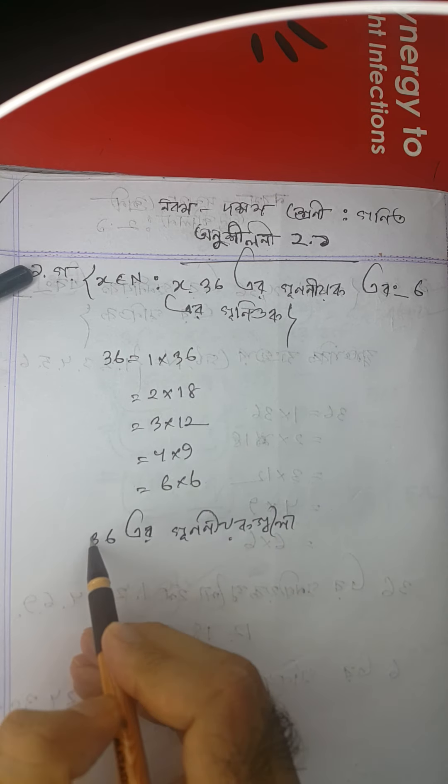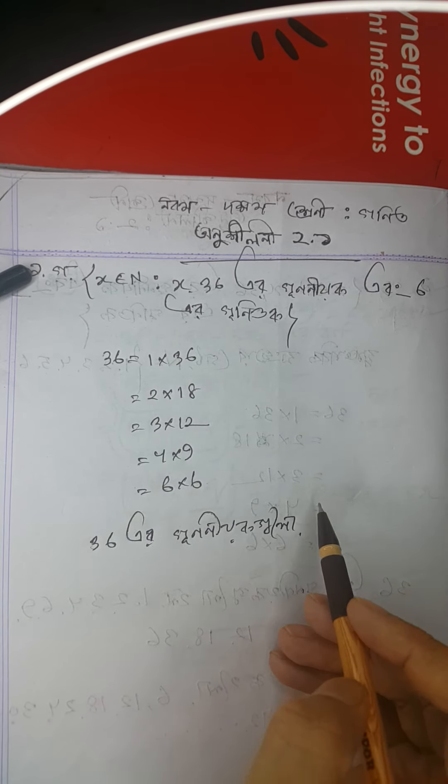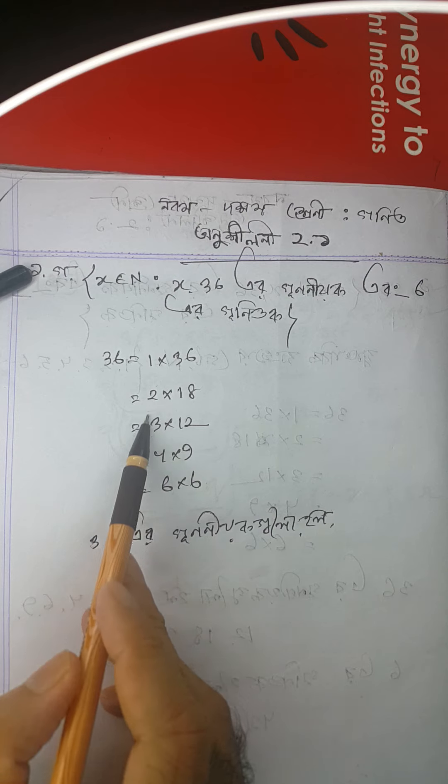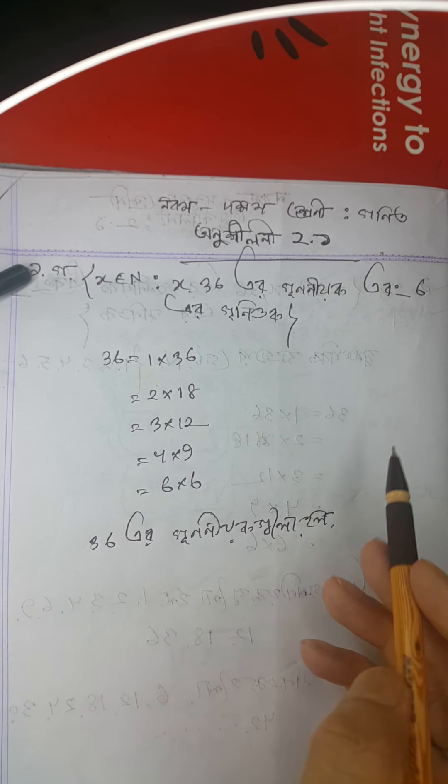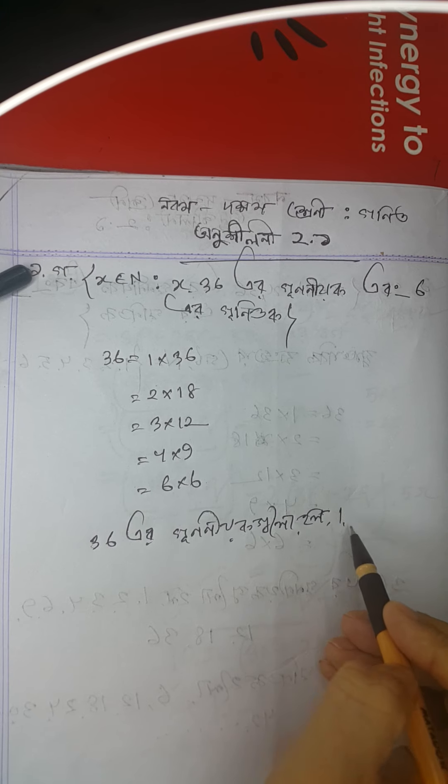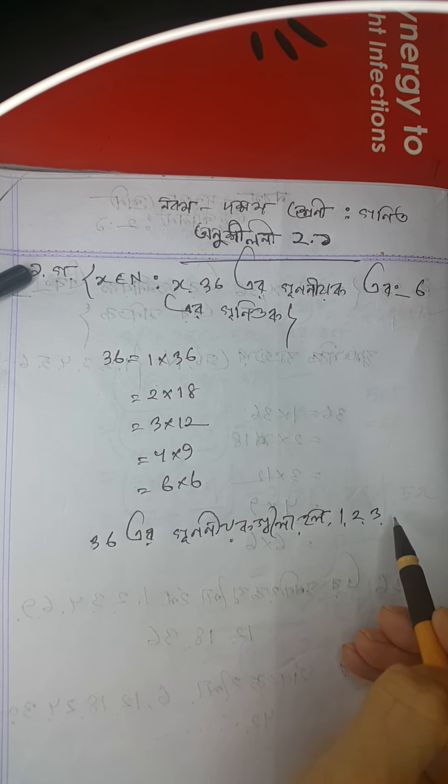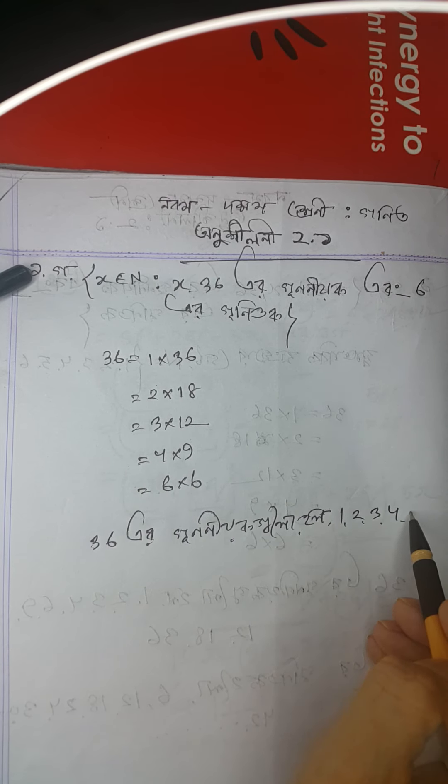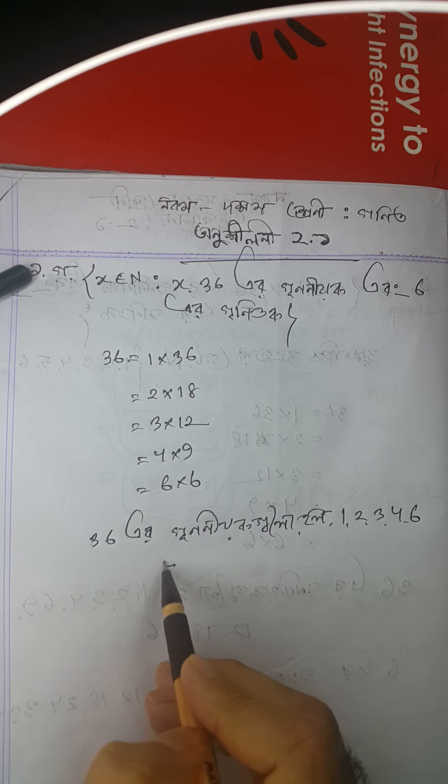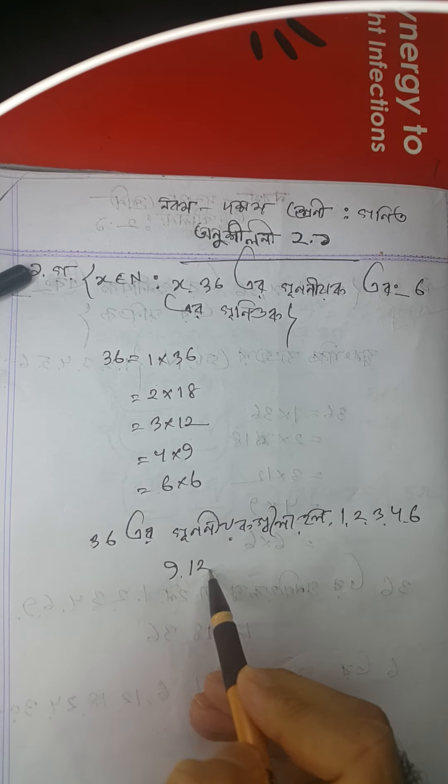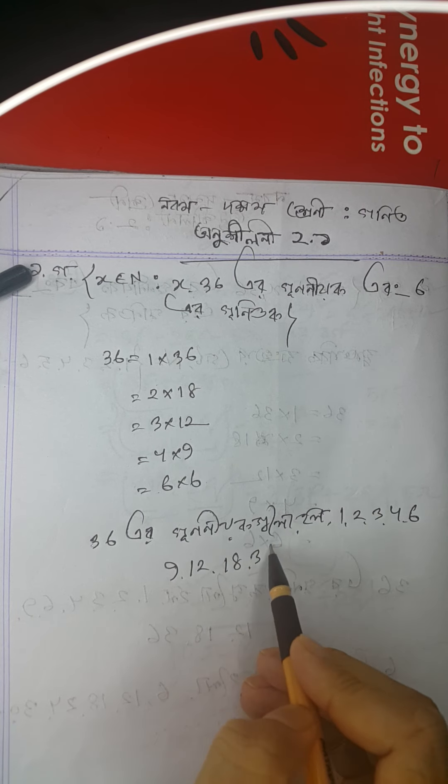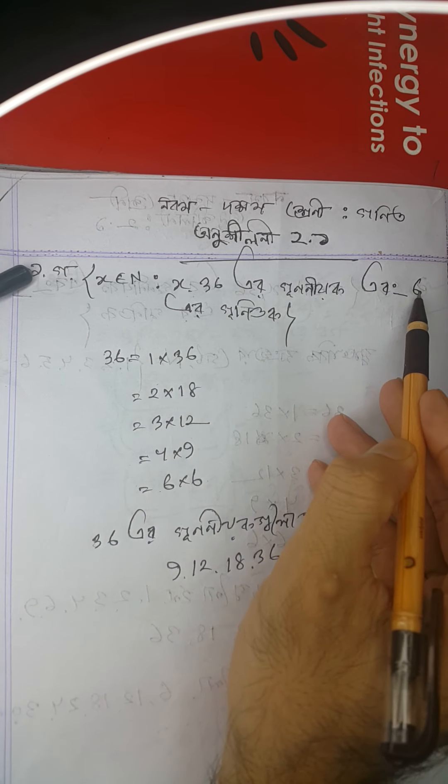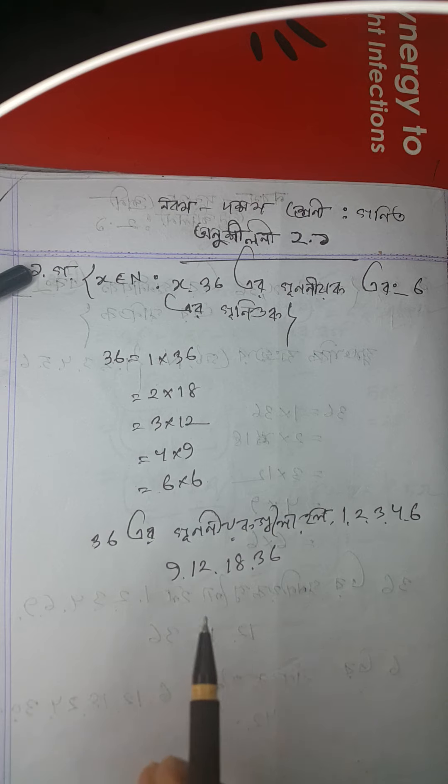The factors of 36 are: 1 times 36, 2 times 18, 3 times 12, 4 times 9, and 6 times 6. So all the factors of 36 are 1, 2, 3, 4, 6, 9, 12, 18, and 36.